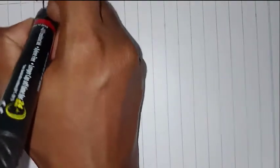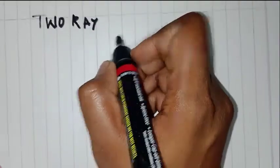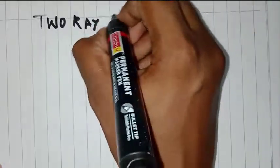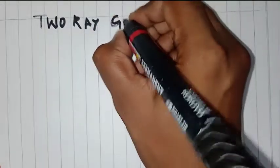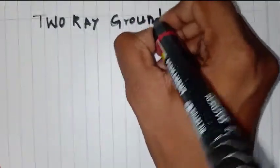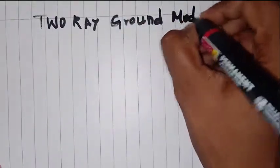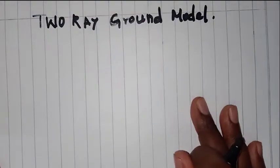Welcome to VSTEC. In this video, we can see the 2-ray ground model, which is a continuation of the free space propagation model. This is a 2-ray propagation model, also called the 2-ray ground model.